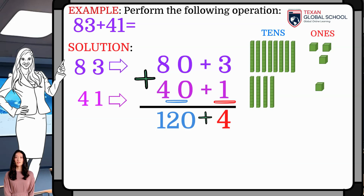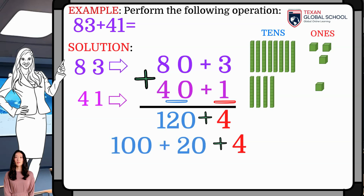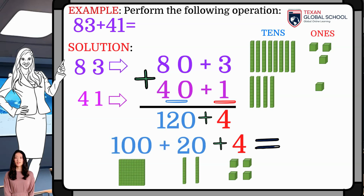You can directly add 120 plus 4. However, in this case, it can be decomposed into 4 1s, 2 10s, and 100. Adding 100 plus 20 plus 4, thus obtaining 124.